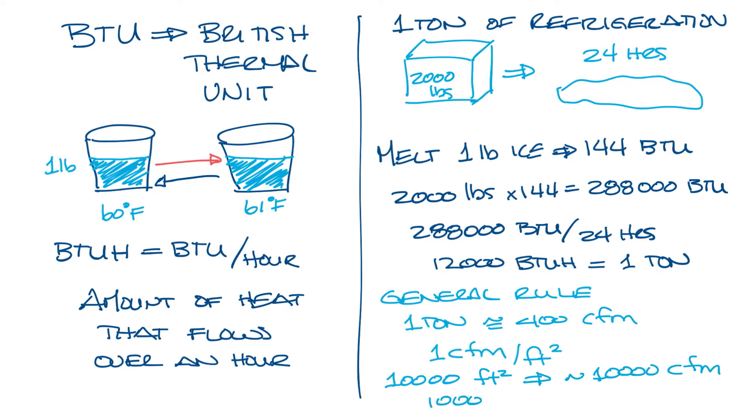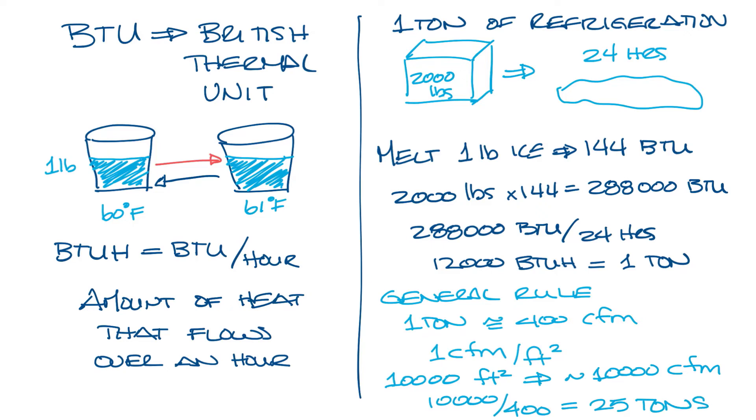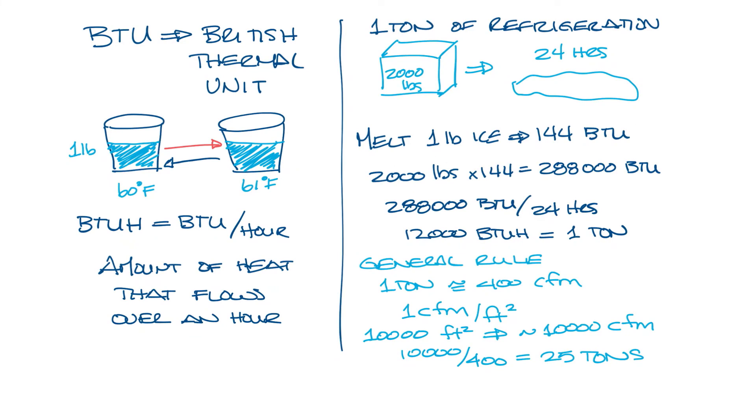And you also know that it's 400 CFM a ton, so 10,000 CFM divided by 400 is 25 tons. Or you can put this into BTU, 25 tons times 12,000 BTU is 300,000 BTU. So now if you know the size of the space, you can do some rough math about how much air you're going to need and how much cooling you need to handle that space.